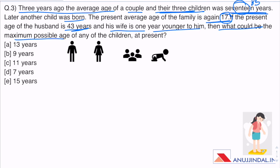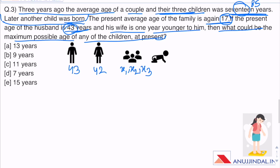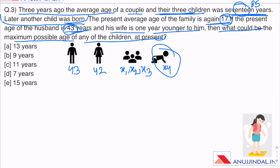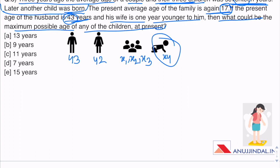What makes this question tricky is the amount of information. Let's simplify it. The information about 'later another child was born' is actually not important, because we have to talk about the present ages of husband and wife and what happened 3 years ago. We know the present age of husband is 43, wife is 42. Let the kids' present ages be x1, x2 and x3. And x4 is not important for us. Now if we talk about what happened 3 years ago, the sum of their ages was 85 because their average was 17.